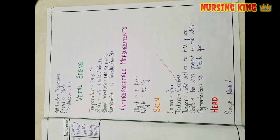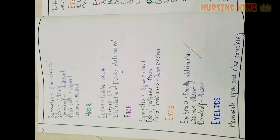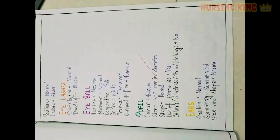After personal history, you write regarding the physical examination. You do a head-to-toe examination — skin, hair, face, eyes — everything. You have to write the color, texture, and every detail. In the physical examination: eyes, rashes, pupils, ears.